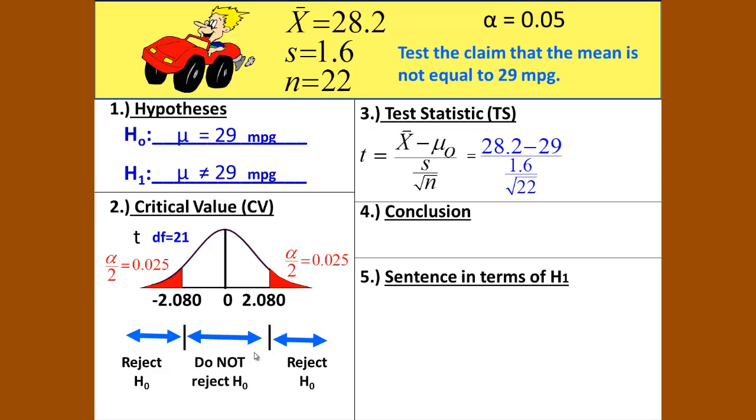Following our formula we have t equals (x bar minus mu) divided by (s divided by the square root of n), which is (28.2 minus 29) divided by (1.6 divided by the square root of 22). I pause there so that I could draw the little arrows to show you where all the numbers are coming from. That gives us, as we calculate that, a negative 2.345. What an interesting number.